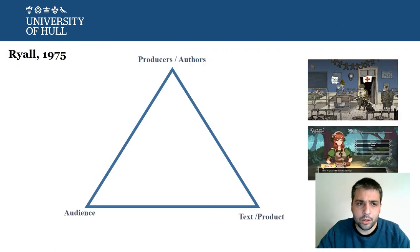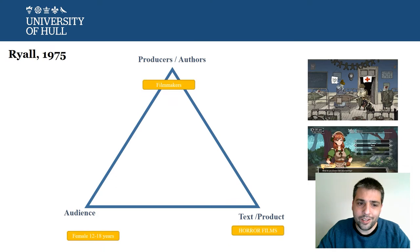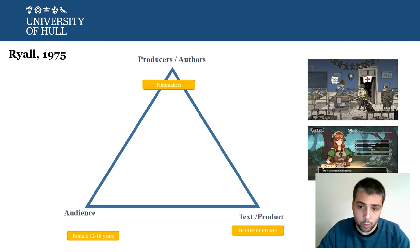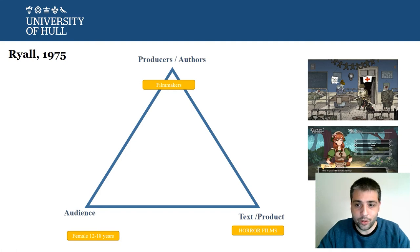We have already talked about the way of understanding genre from a discursive perspective. Genre emerges from the conversation between producers, audience, and the text itself, or the group of texts. We need to understand these three positions in order to better define our genres.